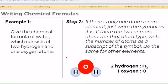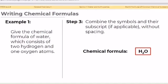There are two hydrogens in water, so we will write H subscript 2. Since there is only one oxygen, we will just write O. Notice that in writing chemical symbols or formulas, a chemical symbol without subscript indicates that there is one atom for that element. Step 3: Combine the symbols and their subscript, if applicable, without spacing. The chemical formula for water is H2O. There must be no space between hydrogen and oxygen.